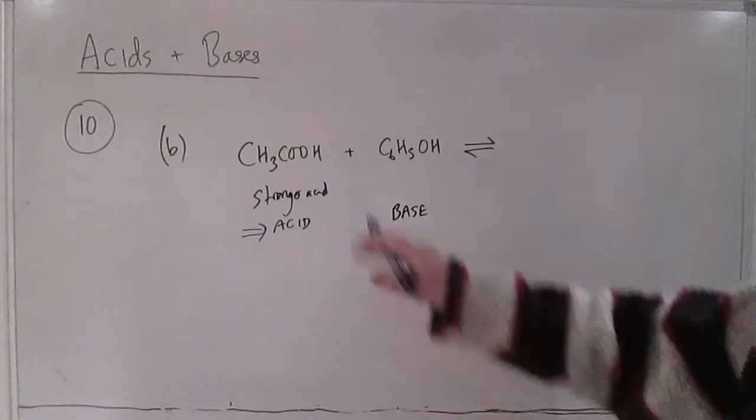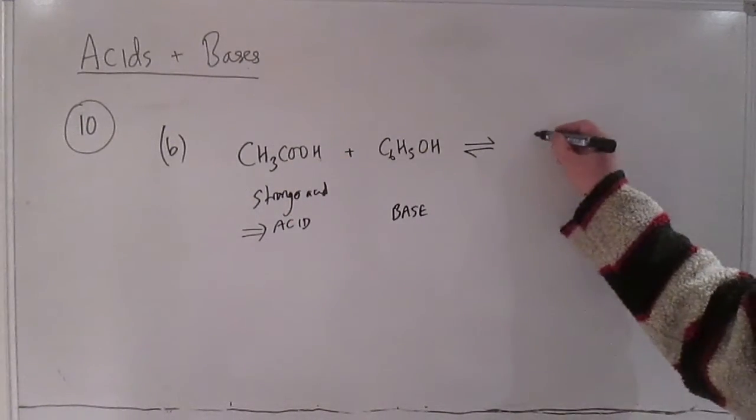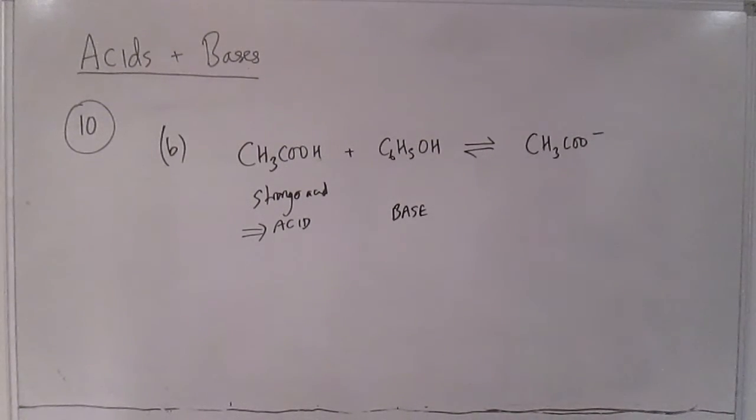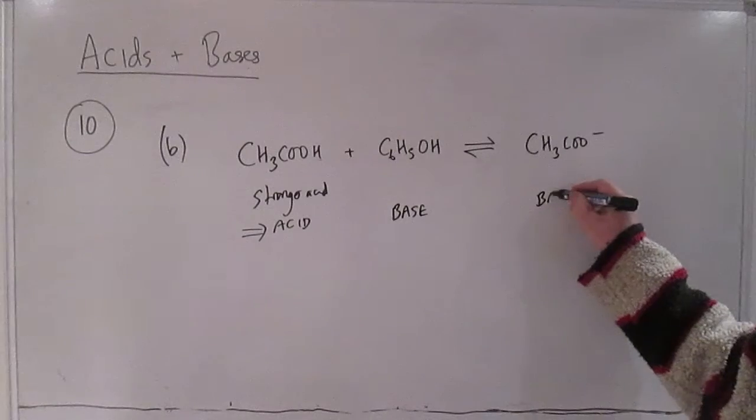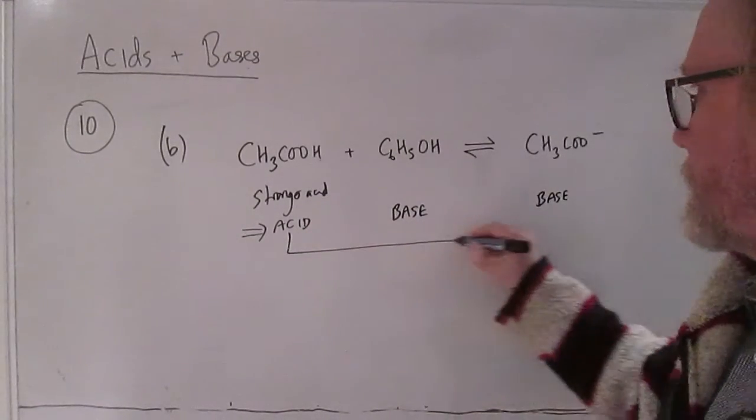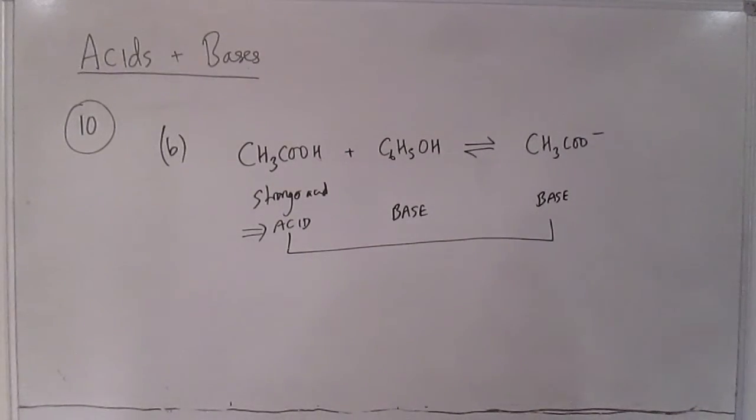And so we can follow that idea through and say right if this functions as the acid this time it's going to donate a proton so we get the familiar ethanoate which is the conjugate base of ethanoic acid, so there's our ethanoic acid ethanoate conjugate pair.